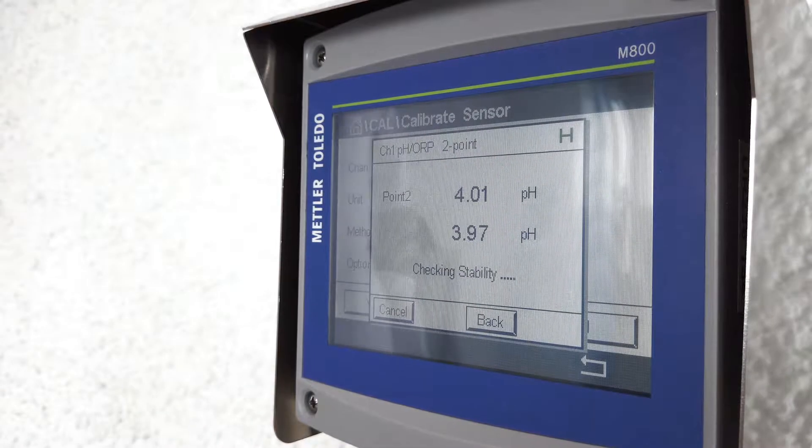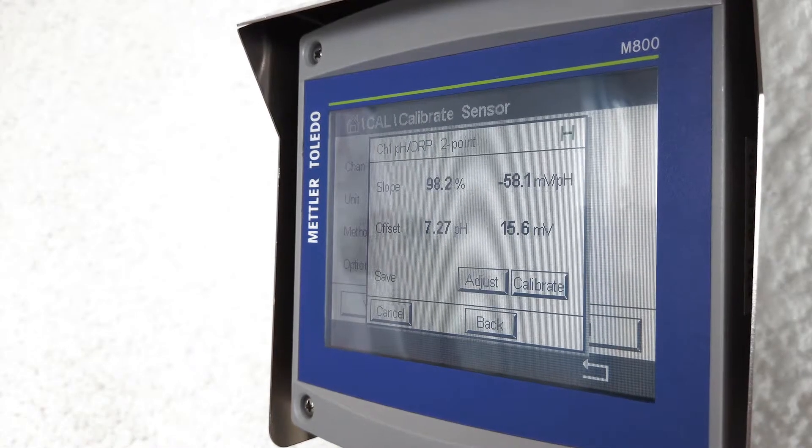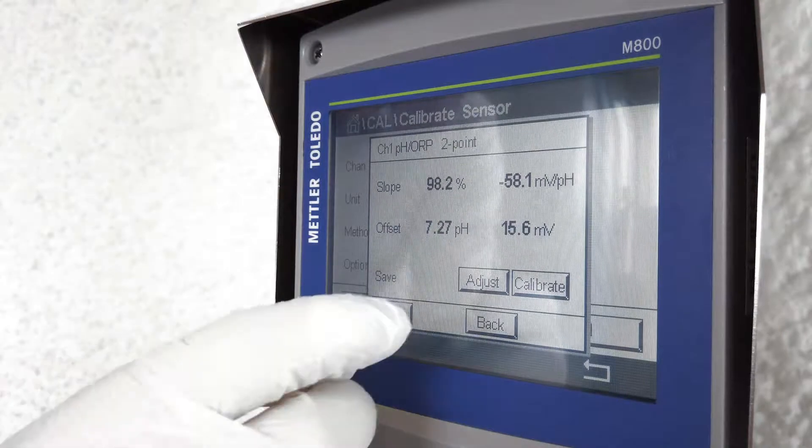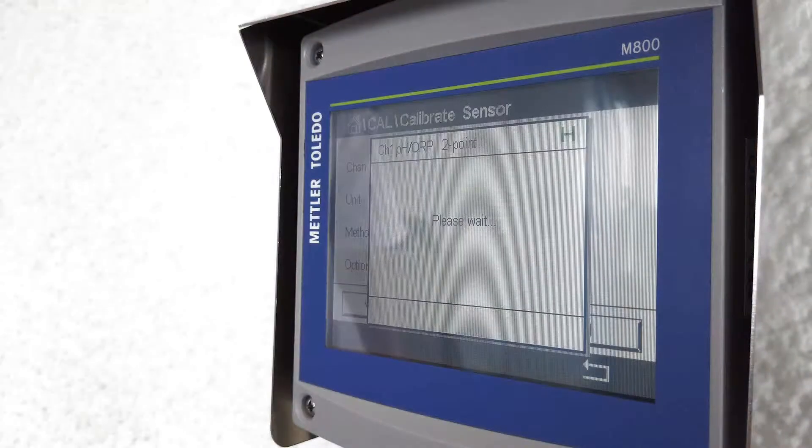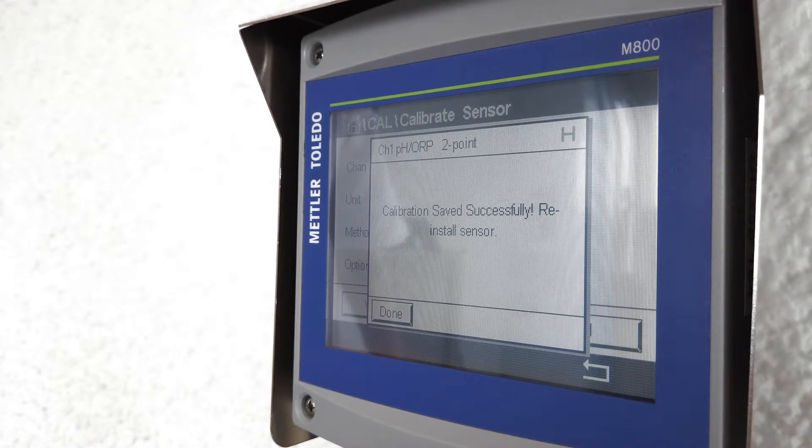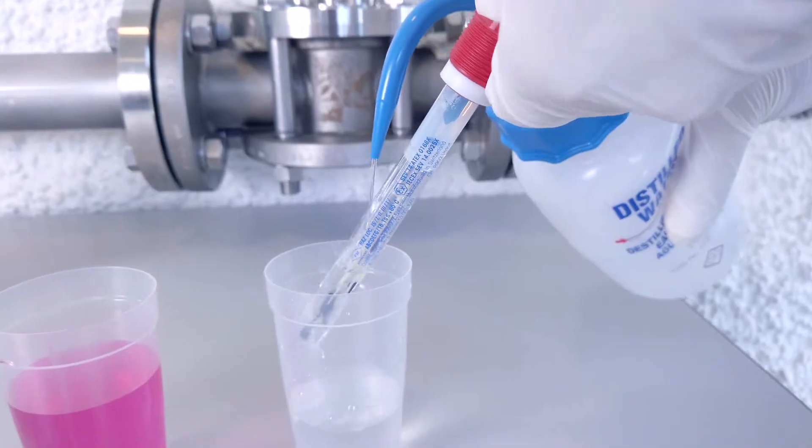Now you can see on the M800 transmitter that the sensor was calibrated with the displayed slope and percentage value and a zero point in pH value. You can now adjust the sensor by clicking adjust. This saves the calibration data and stores the values for the zero point and slope on the transmitter. Now your sensor is calibrated successfully.